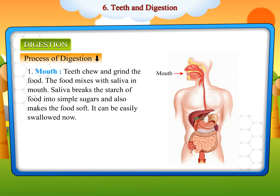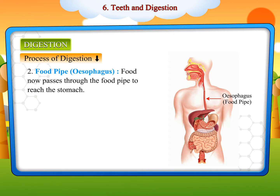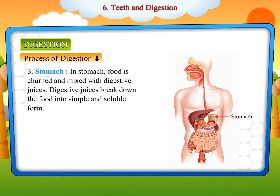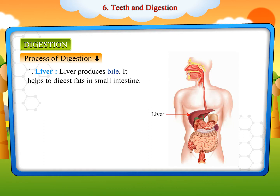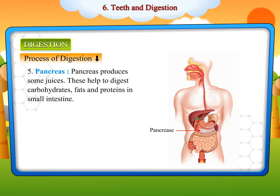Food then passes through the food pipe (esophagus) to reach the stomach. In the stomach, food is churned and mixed with digestive juices, which break down the food into simple and soluble form. The liver produces bile, which helps to digest fats in the small intestine. The pancreas produces juices that help to digest carbohydrates, fats, and proteins in the small intestine.